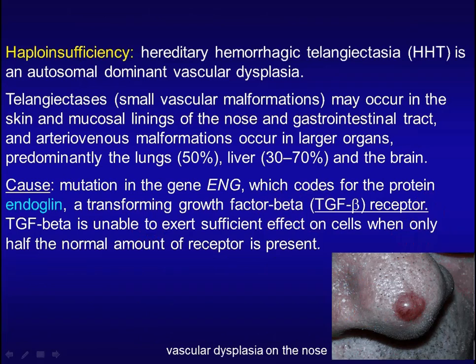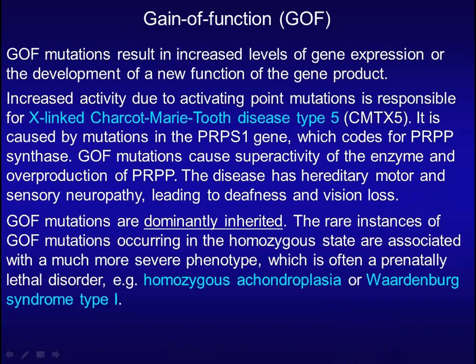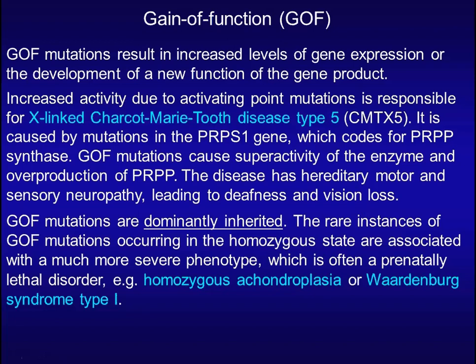Heterozygotes with the mutation still have a phenotype. Gain of function mutations result in increased level of gene expression or the development of a new function of the gene product. For example, X-linked Charcot-Marie-Tooth disease type 5 is caused by mutation in the PRPS gene, which codes for PRPP synthase. Gain of function mutations cause superactivity of the enzyme and overproduction of PRPP. The disease features hereditary motor and sensory neuropathy leading to deafness and vision loss. Gain of function mutations are dominantly inherited, and the rare instances occurring in a homozygous state are associated with a much more severe phenotype, often a prenatally lethal disorder such as homozygous achondroplasia or Waardenburg syndrome type 1.